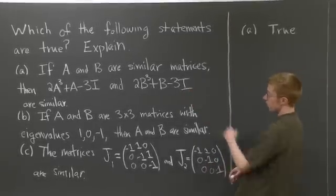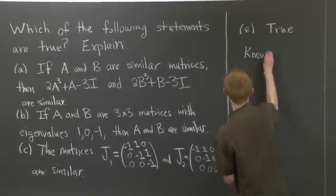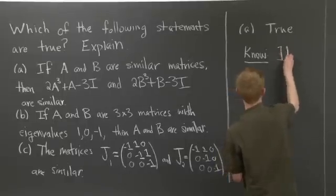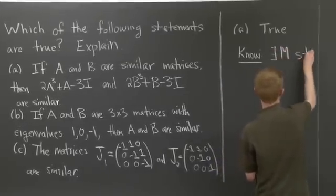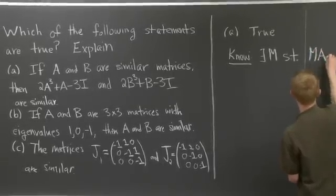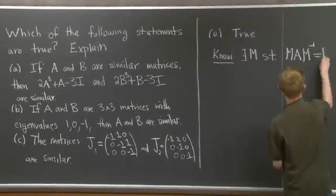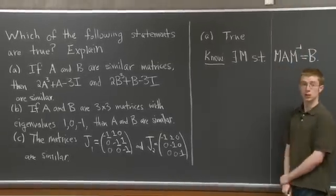What does it mean for A and B to be similar, right? We know there's some matrix M such that when I multiply A on the left by M and the right by M inverse, I get B.